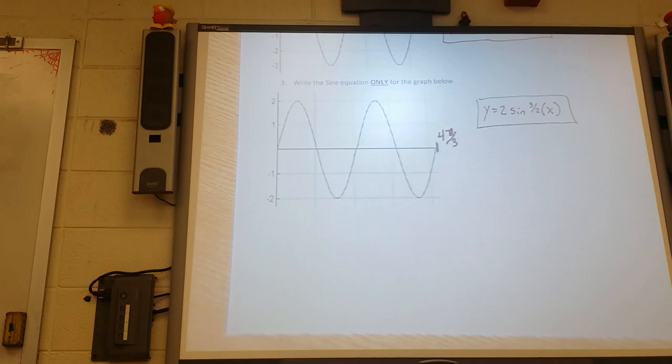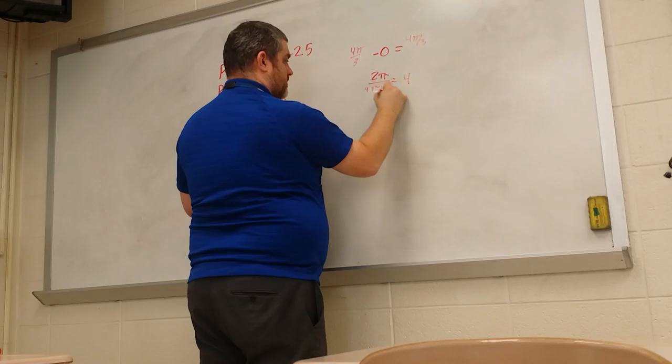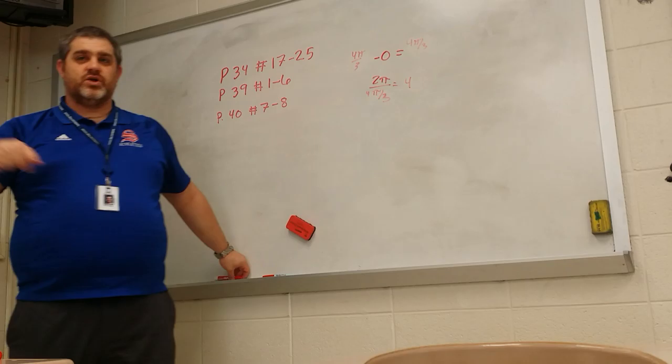How did you get the fraction 3 over 2? The last one is 4 pi over 3. So when you do 2 divided by parenthesis 4 thirds closed parenthesis, it does give you the fraction equivalent of 3 halves.